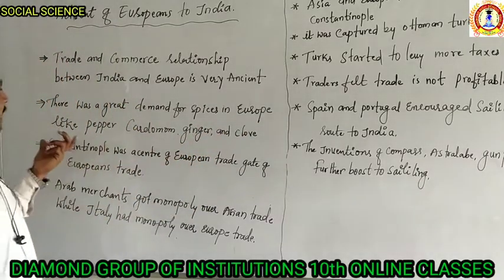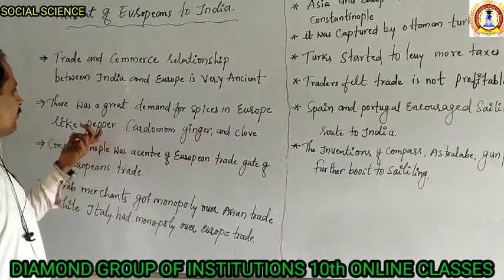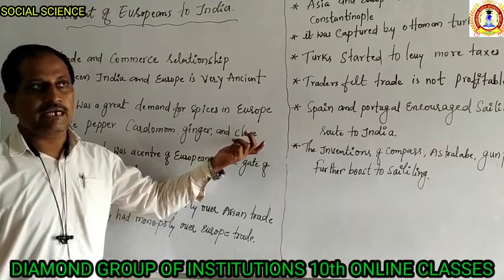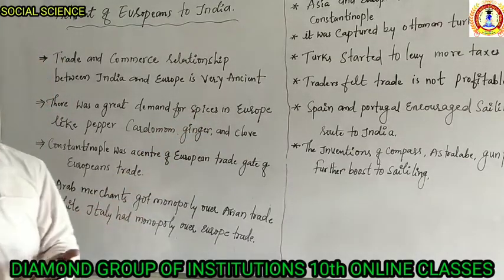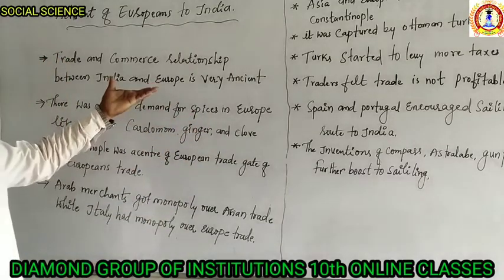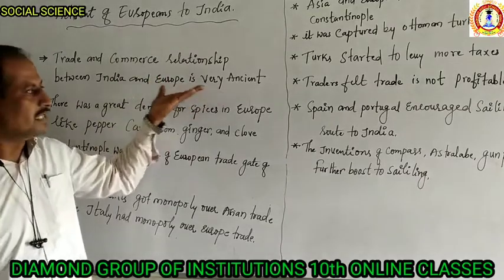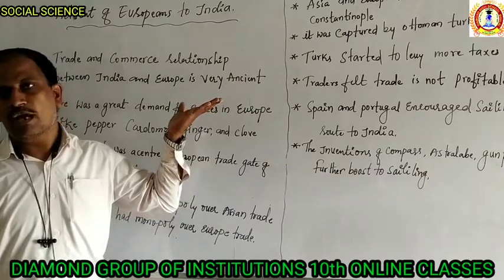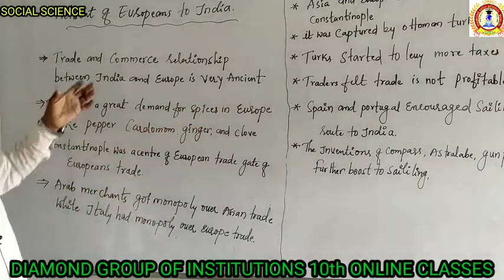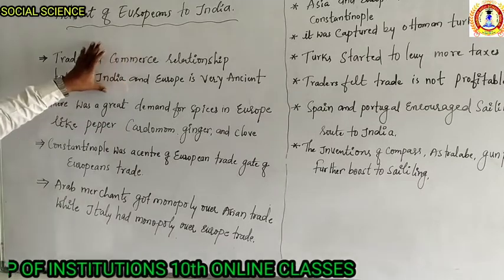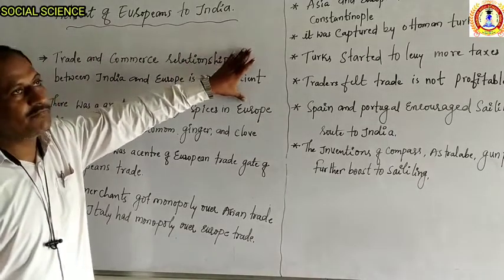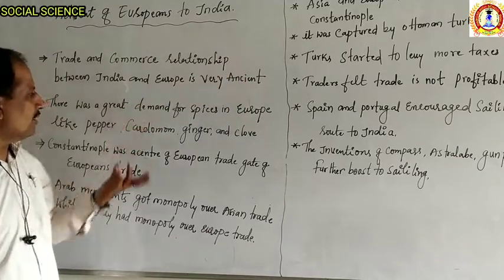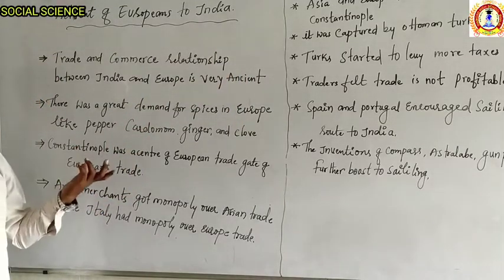India had a lot of production of pepper, cardamom, ginger, and cloves. In ancient times, the first trade developed with India was by Marco Polo and his brother. Marco Polo started business with India in ancient trade, and since then relations continued to develop in the middle ages as well.